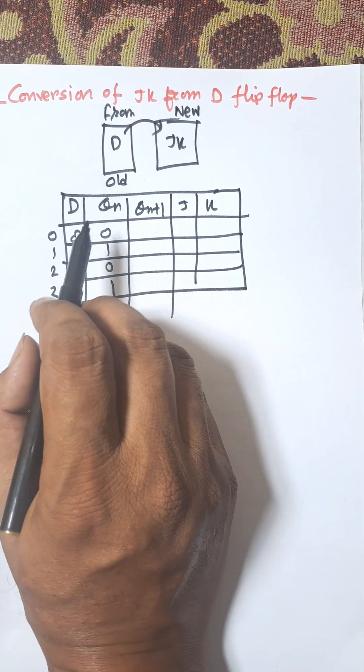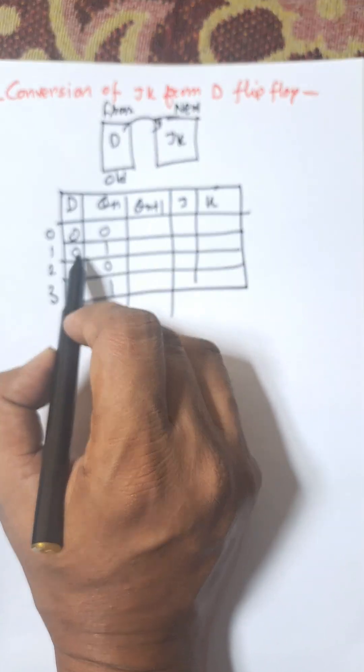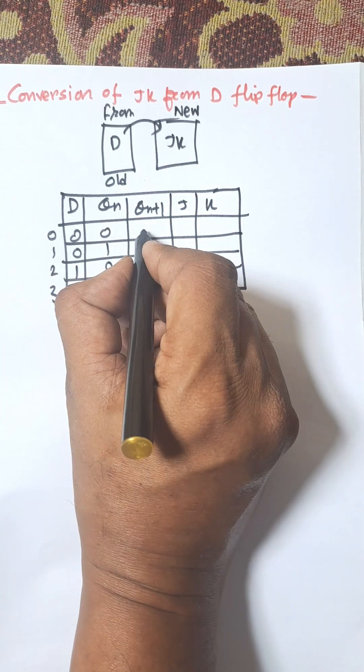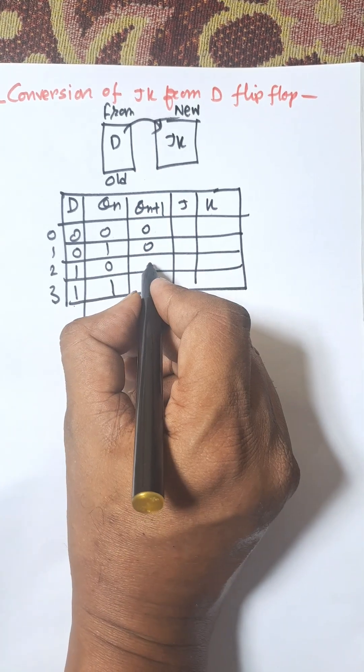And we know for D flip-flop, D input, direct input will be copied to the next state which is 0 0 and 1 will copy to 1 1.